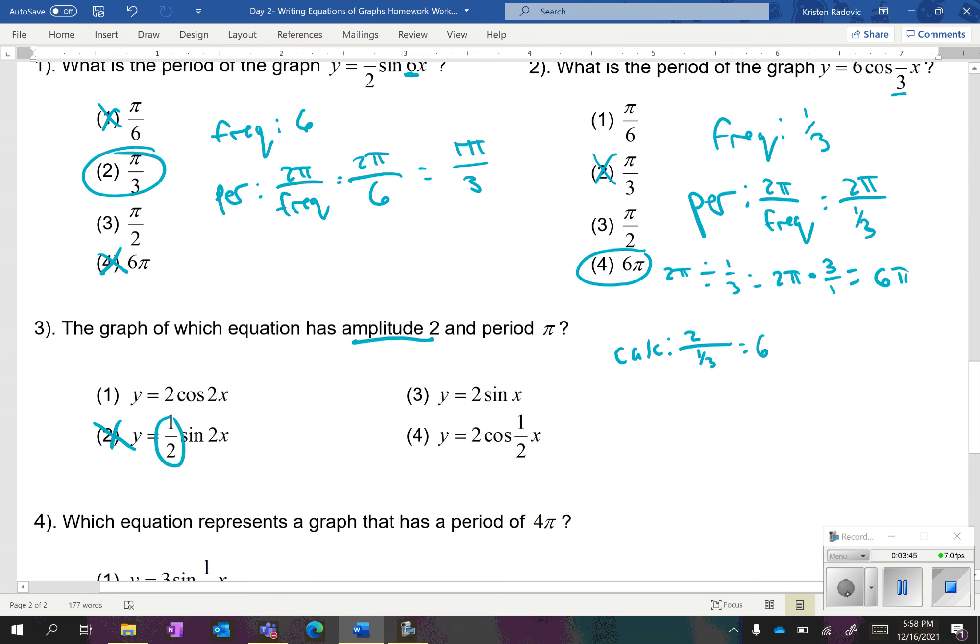However, to know which one has a period of pi, we have to convert it to a frequency. That way, we can figure out what should go in the equation. So, your frequency is two pi over your period. The problem tells us that our period is pi. So, two pi divided by pi, your pi's cancel out, and you're left with two. This one has an amplitude of two and a frequency of two, which is going to be choice one, because a frequency of two gives us a period of pi.